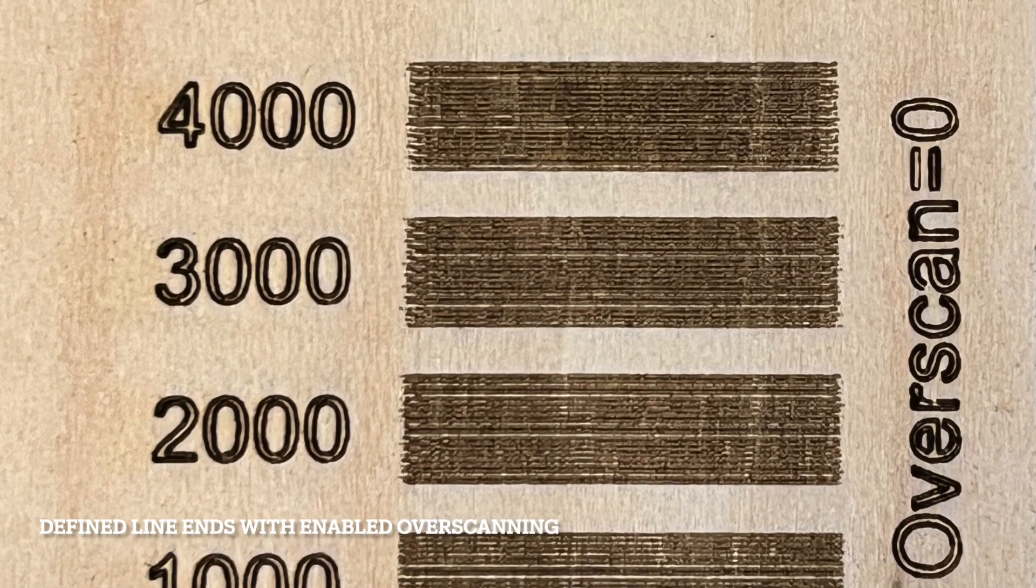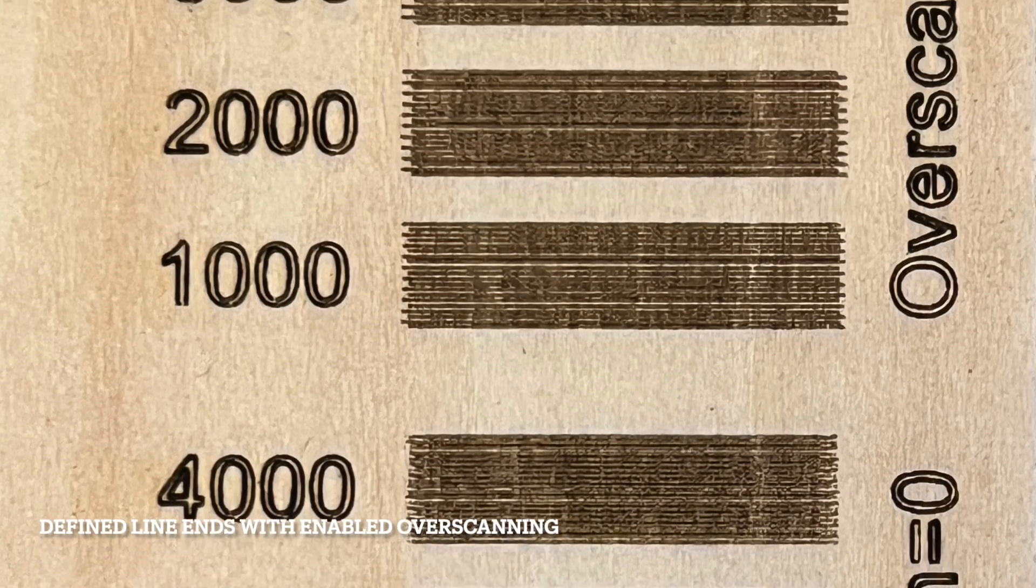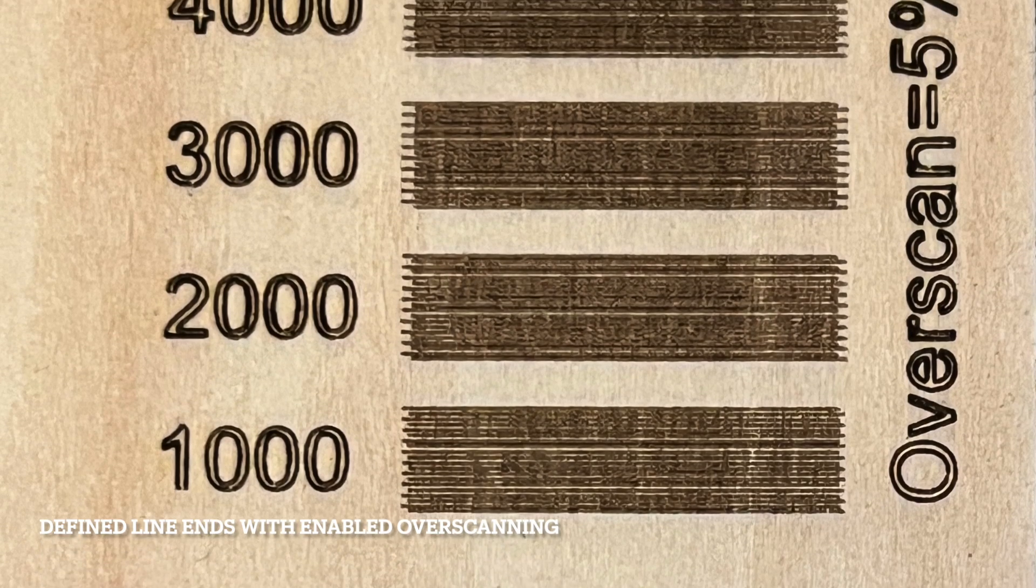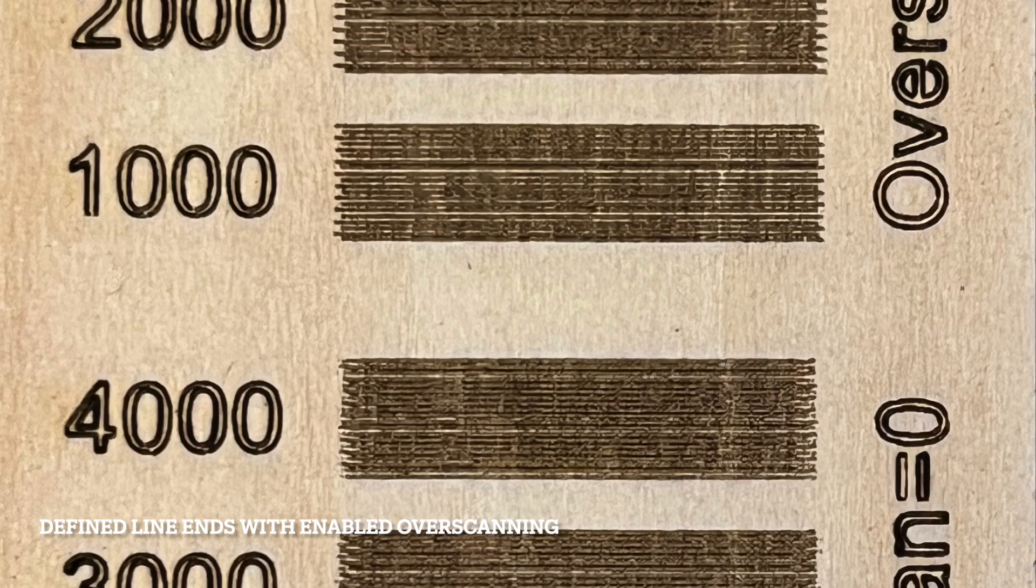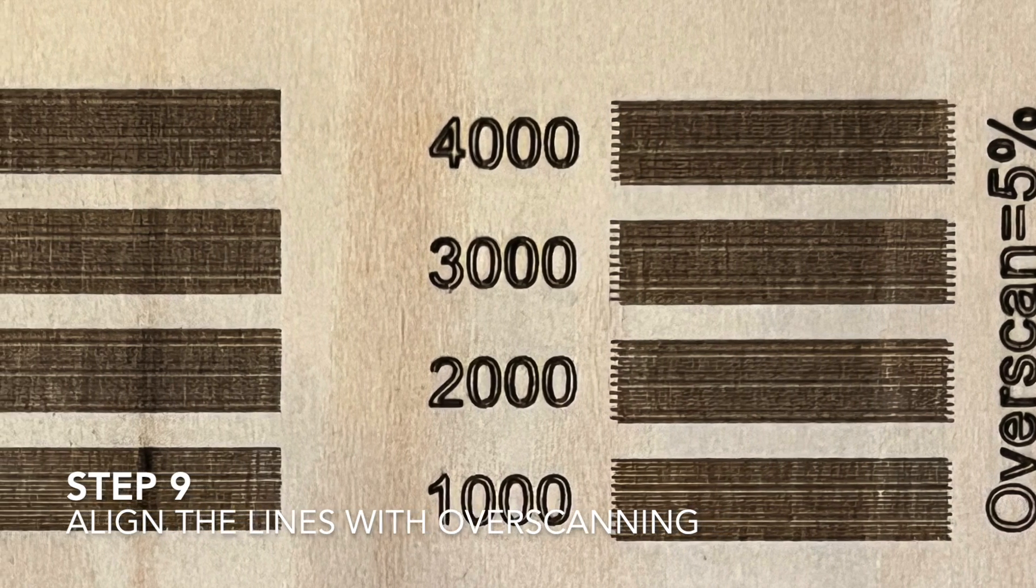What I can see first is the lines are not aligned anymore. But secondly, and most importantly, I can see the lines' both ends are much more similar and have the same engraving intensity as the rest of the line, which is what I wanted to achieve. Next is to investigate how to put those lines back to alignment.